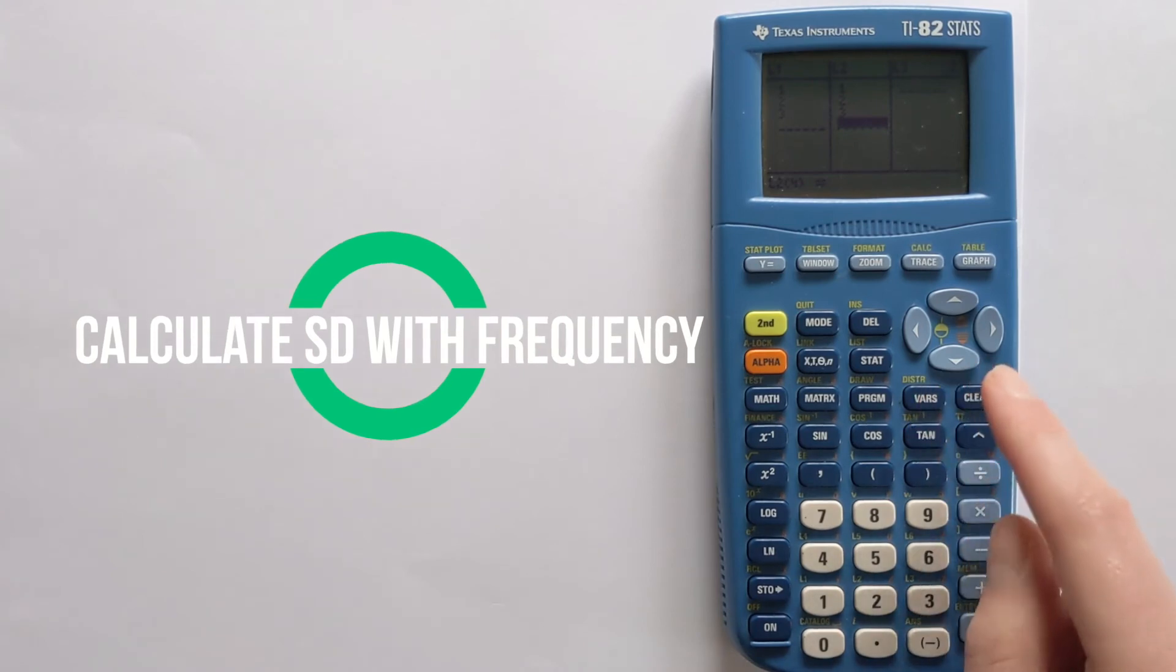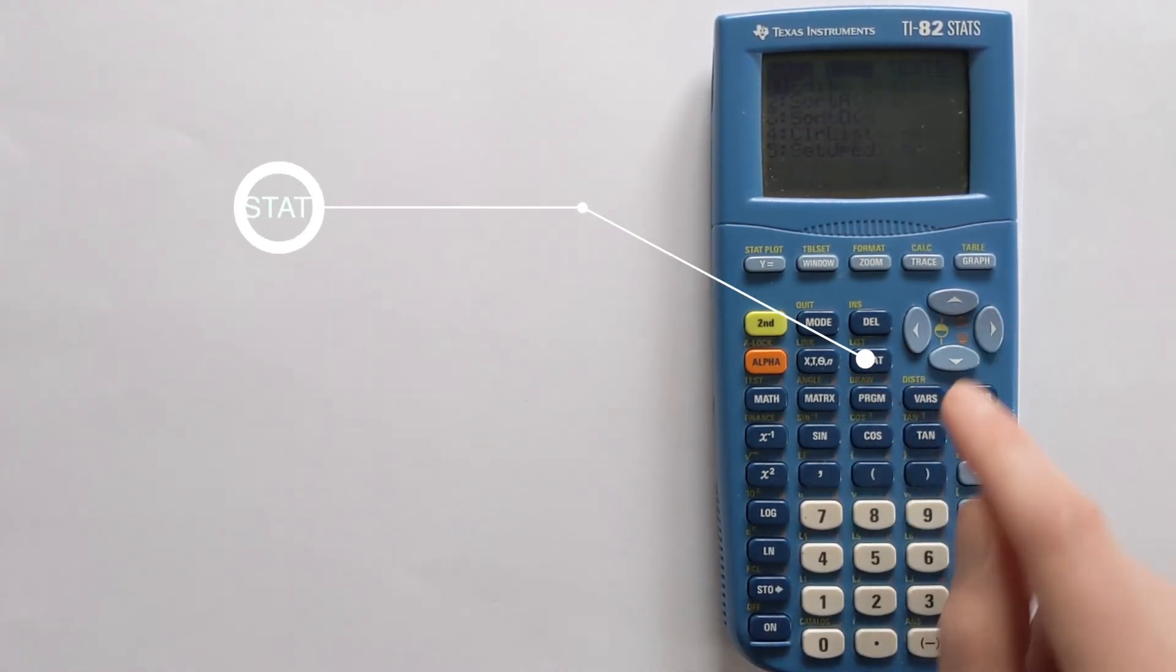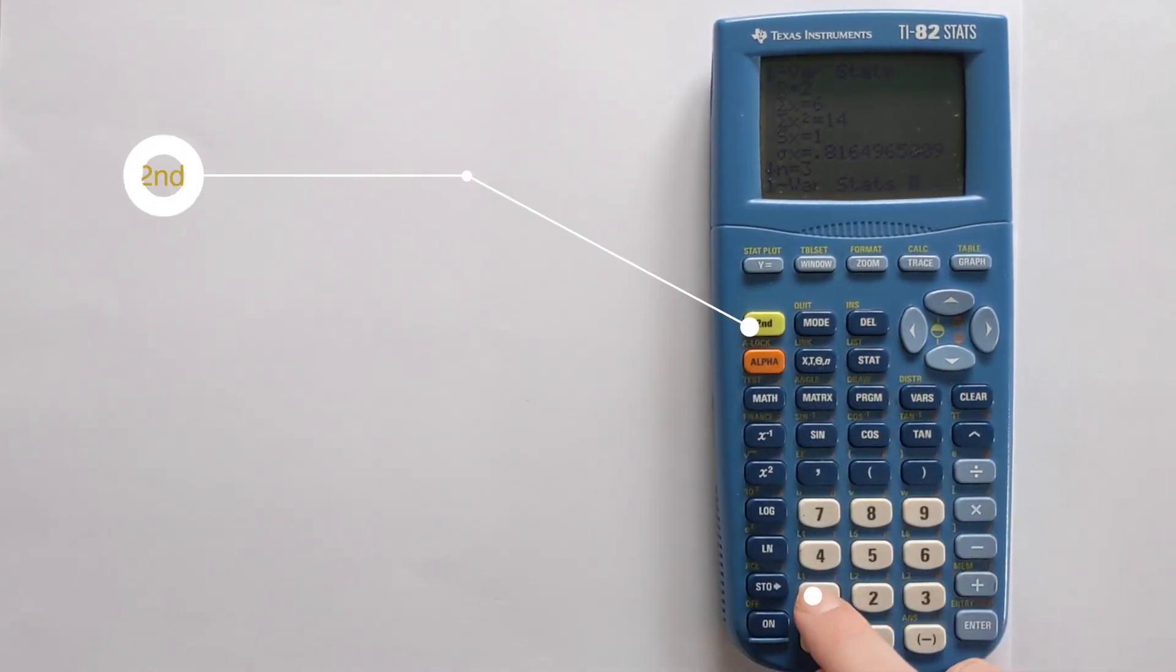We want to go back into the calculation. We go STAT, and then if we go to CALC here, we can press one variable statistics. This time, we're going to write it a little bit differently. We're going to go to second function L1.